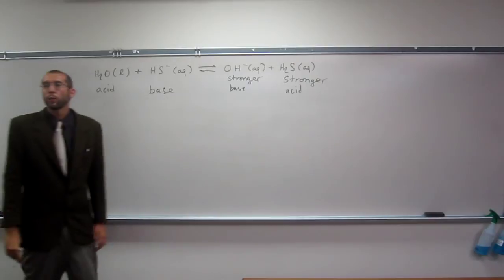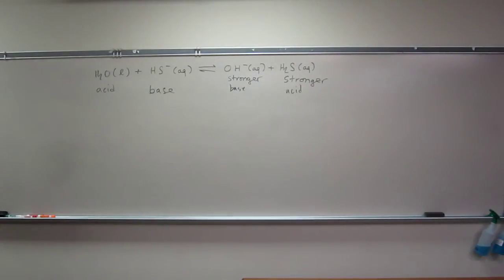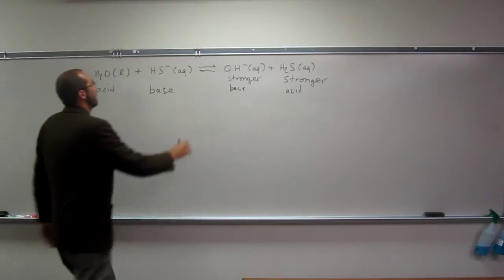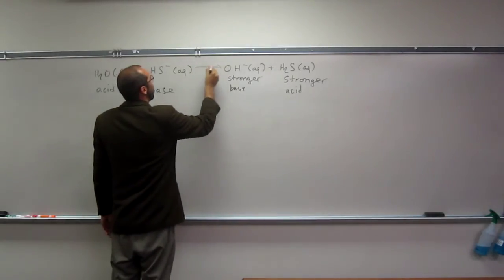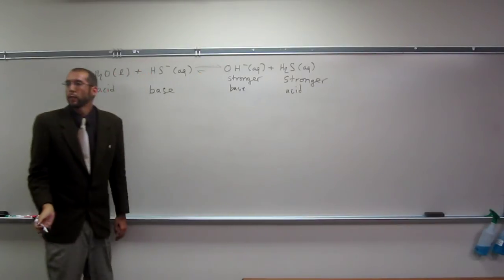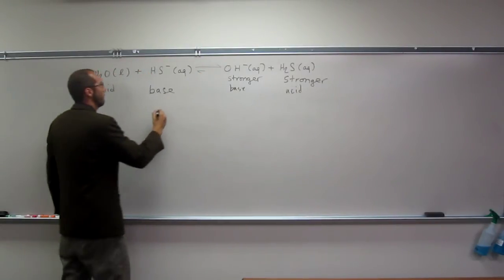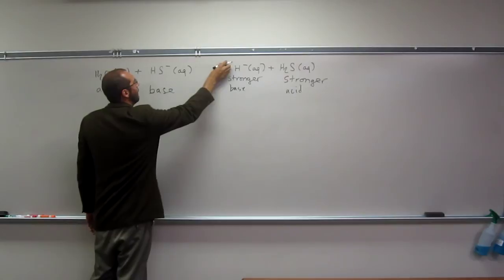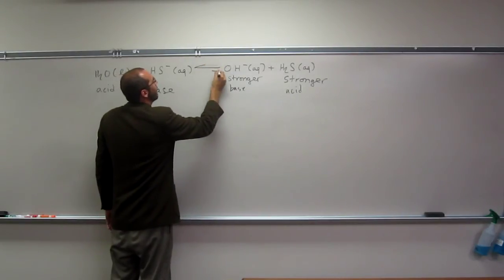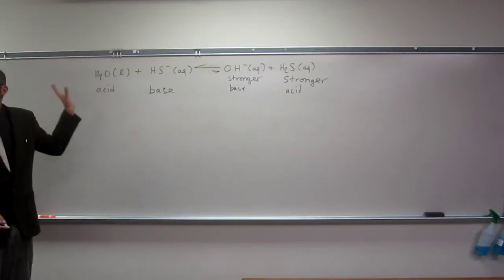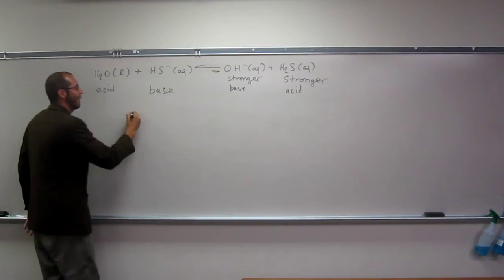So which way would this reaction go? To the right or to the left? To the left. To the left. So we could write it something like this - a big arrow that way and a little arrow that way. No, sorry about that - a big arrow that way and a little arrow that way, saying the reaction goes to the left.